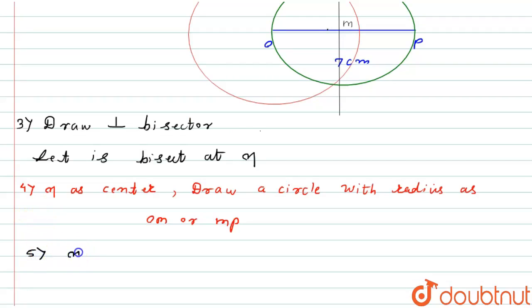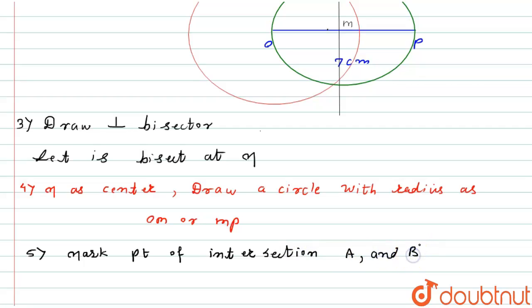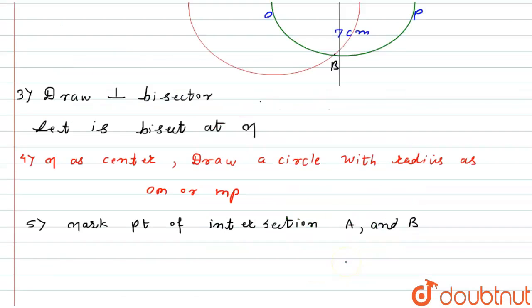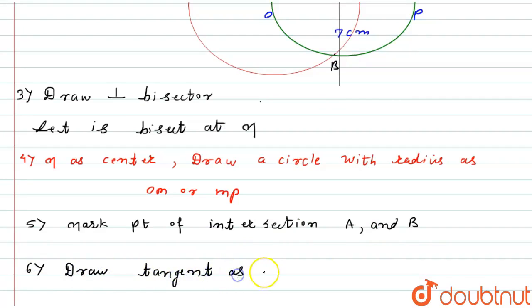The next step is to mark the points of intersection of the second circle with the first one as A and B. So I will mark these intersection points as A and B.